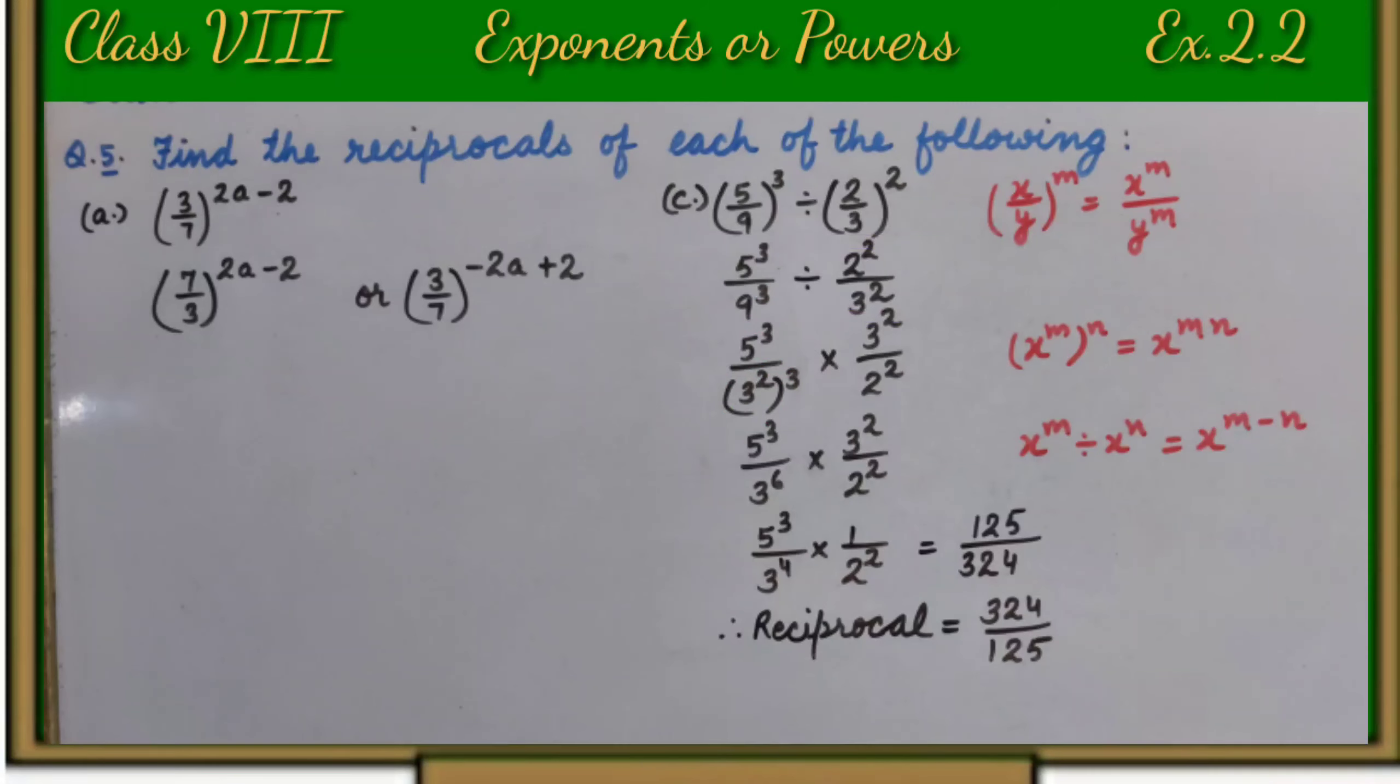And we change the sign of division to multiplication and reciprocate the divisor. So we get 5 raise to power 3 upon 3 square whole raise to power 3 multiplied by 3 square upon 2 square.